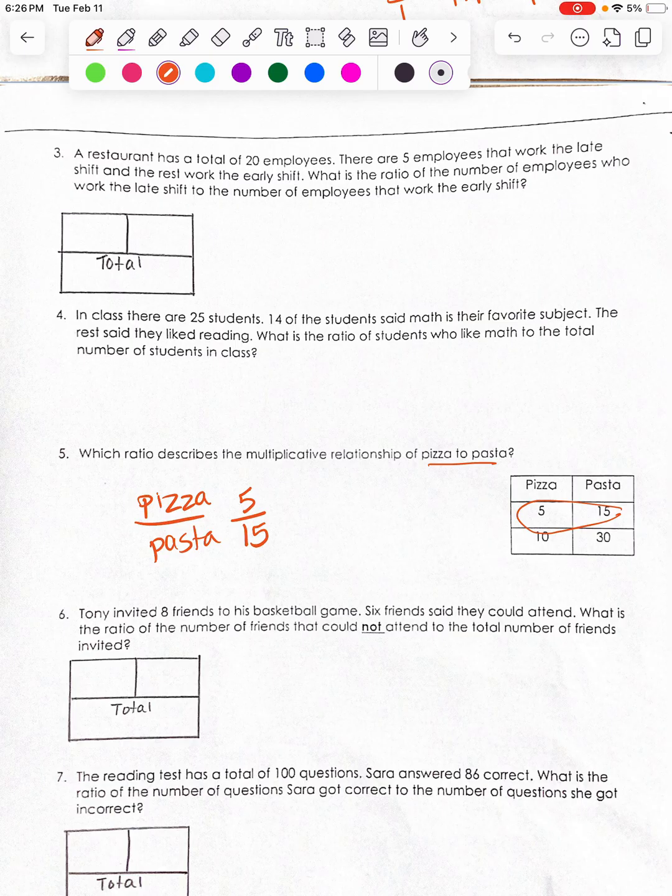This one, because it's asking me the multiplicative relationship, I want to know what is it multiplying by. So I'm going to simplify this. Divide by 5, divide by 5. And I get 1 to 3. So that one's a little bit different. I hope this helps.